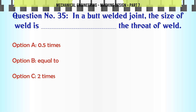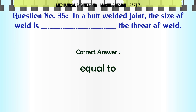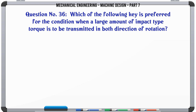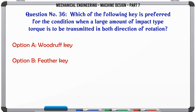In a butt welded joint, the size of the weld is the throat of the weld: a) 0.5 times, b) equal to, c) 2 times, d) double. The correct answer is: equal to.